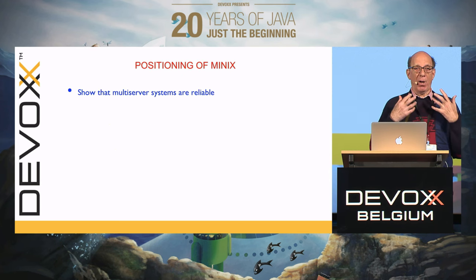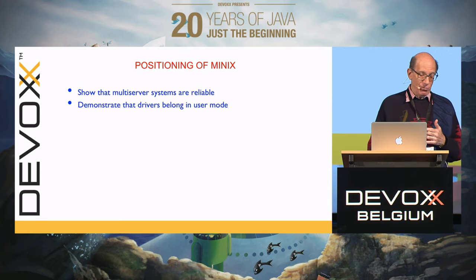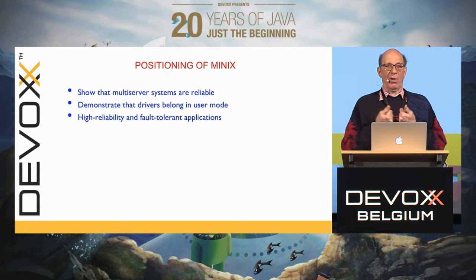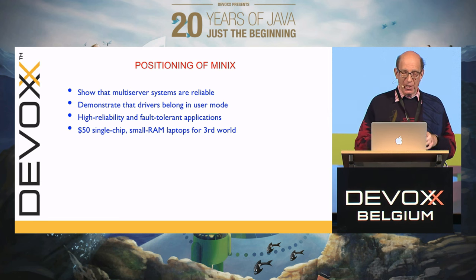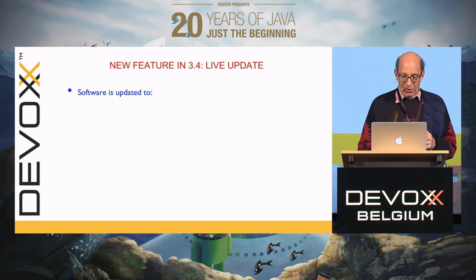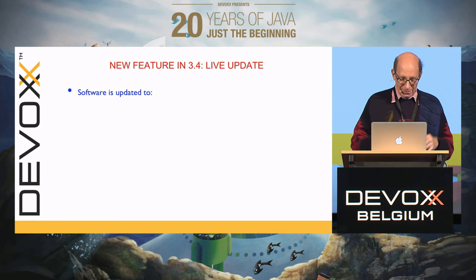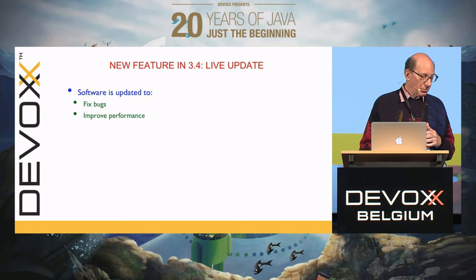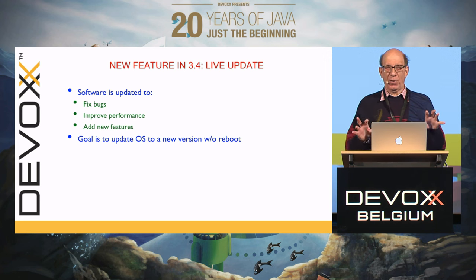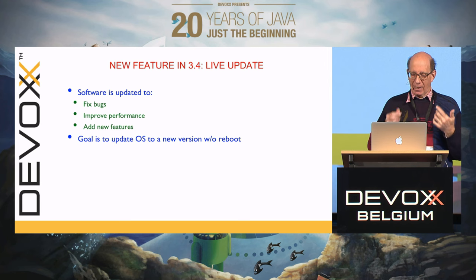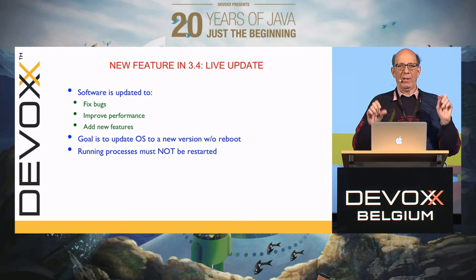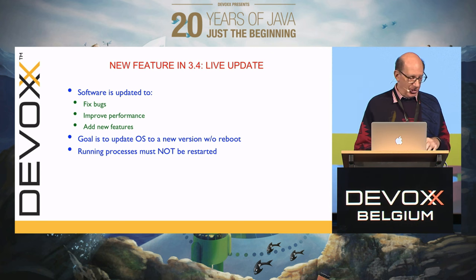We're trying to show that multi-server systems can be made very reliable and that drivers belong in user mode. We're talking about high reliability fault-tolerant applications, particularly embedded systems. We have a new feature coming up in version 3.4: live update. Software is frequently updated to fix bugs, improve performance, and add features — the goal is to update the operating system without rebooting. If you have a new version of Windows, iOS, or Linux, you've got to reboot the computer. We don't want to reboot, we don't want to interfere with running processes, and we do want to change the operating system. No current system can do this in a reasonable way.